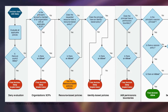This is called the deny evaluation. If there is no explicit deny, it checks the second condition: is the principal's account a member of an organization with an applicable SCP? If yes, it checks whether there is an allow. If there is no allow, the final decision will be implicitly denied because no SCP allow is present — this is called the organizational SCP implicit deny.